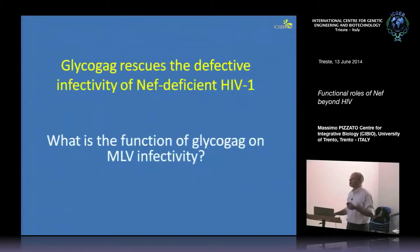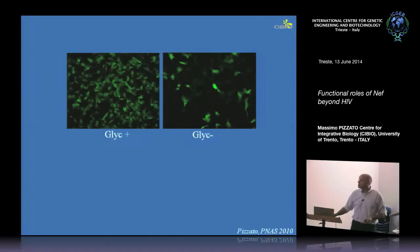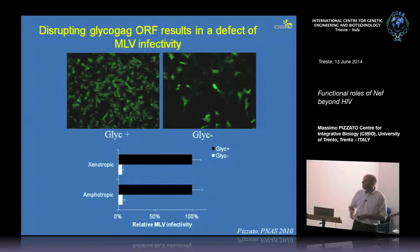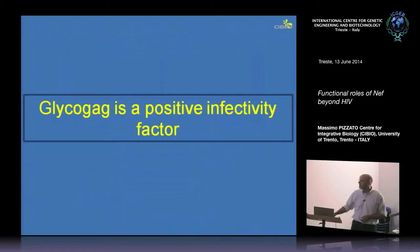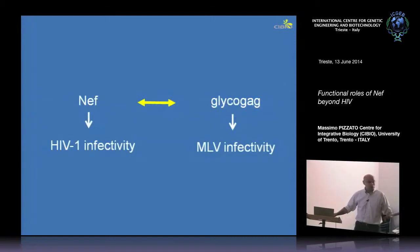If you prevent translation of glycoGAG, HIV can no longer find support from MLV. So glycoGAG is the protein in gamma retroviruses that basically has a NEF-like function. And the effect is really the same — on MLV also, you can see plus or minus glycoGAG there's quite a big difference in infectivity, very similar to what NEF does to HIV.